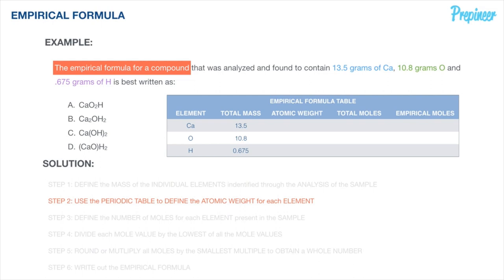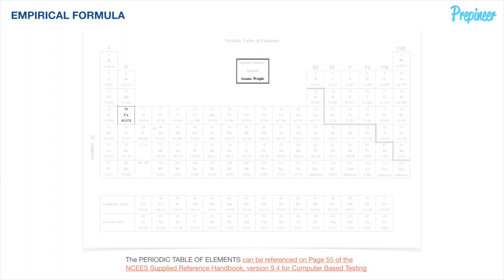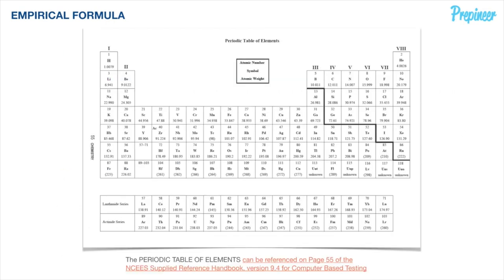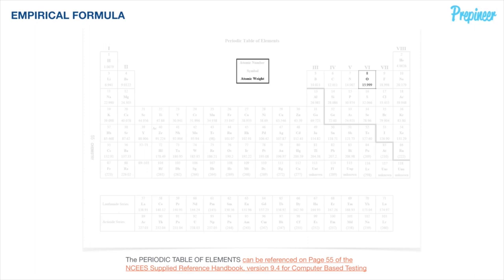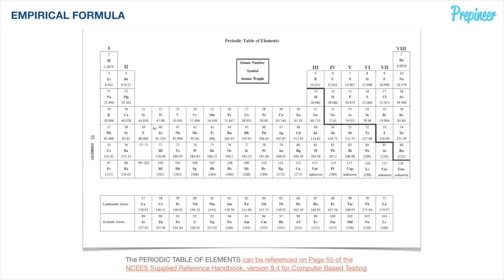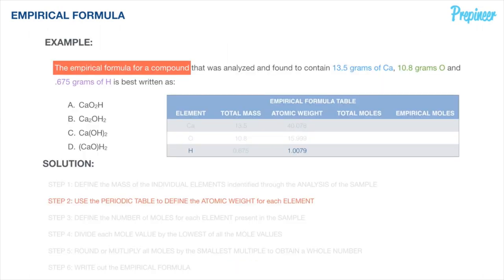Now we use the periodic table to define the atomic weight for each element. From page 55 of the NCEES reference handbook, calcium (element 20) has an atomic weight of 40.078. Oxygen has an atomic weight of 15.999. Hydrogen (element 1) has an atomic weight of 1.0079. We record these values in our table.